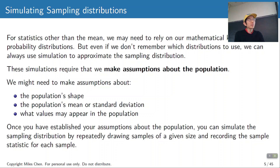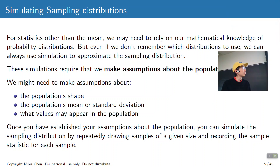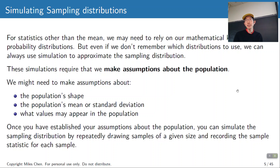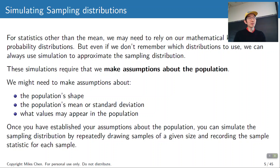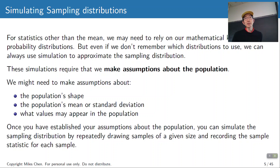So for values other than the mean, you'd have to rely on your mathematical knowledge of probability distributions — covered in stats 100B or Math 170. But even if you don't remember the exact mathematical distribution to use, we can use simulations to approximate the sampling distribution. Whenever we do a simulation, we have to make assumptions about the population. And that's really true anytime you do statistical inference — you have to make assumptions.